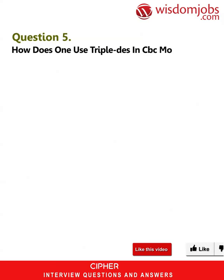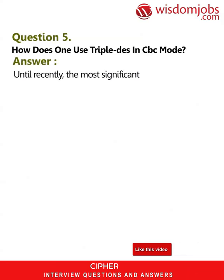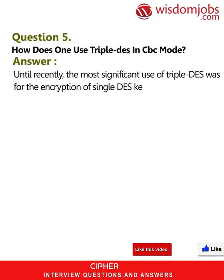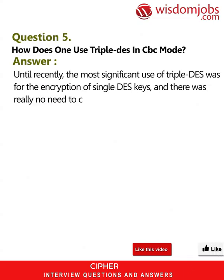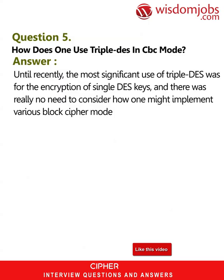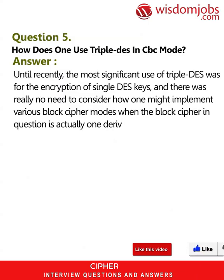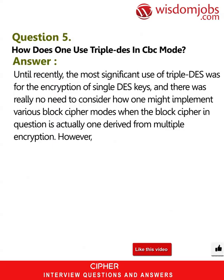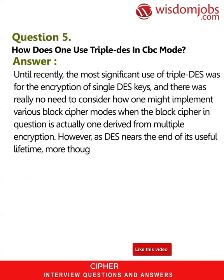Question 5: How does one use Triple DES in CBC mode? Answer: Until recently, the most significant use of Triple DES was for the encryption of single DES keys, and there was really no need to consider how one might implement various block cipher modes when the block cipher in question is actually one derived from multiple encryption. However, as DES nears the end of its useful lifetime, more thought is being given to an increasingly widespread use of Triple DES.